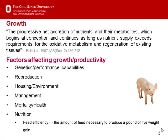Growth is a progressive net accretion of nutrients and nutrient metabolites, beginning at conception, so feeding the sow becomes important. Factors affecting growth and productivity include genetic performance — standard white lines are what you see in the industry, with some niche lines like the Berkshire breed. Reproduction, housing, environment, management, mortality, and health are critical components. And lastly, nutrition — how does it impact the GI tract and feed efficiency?